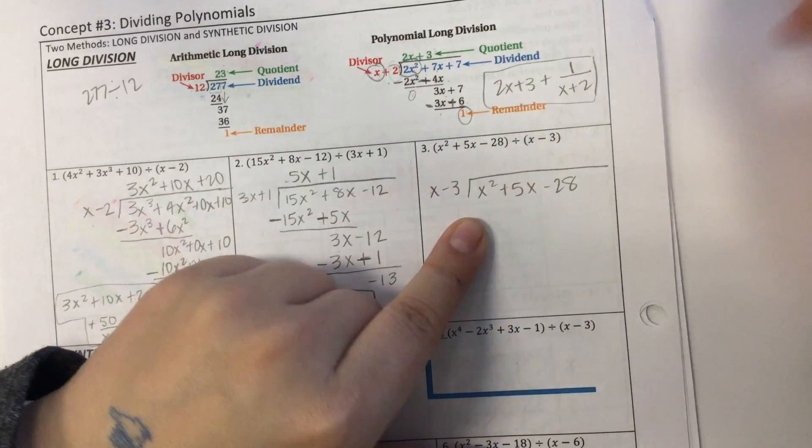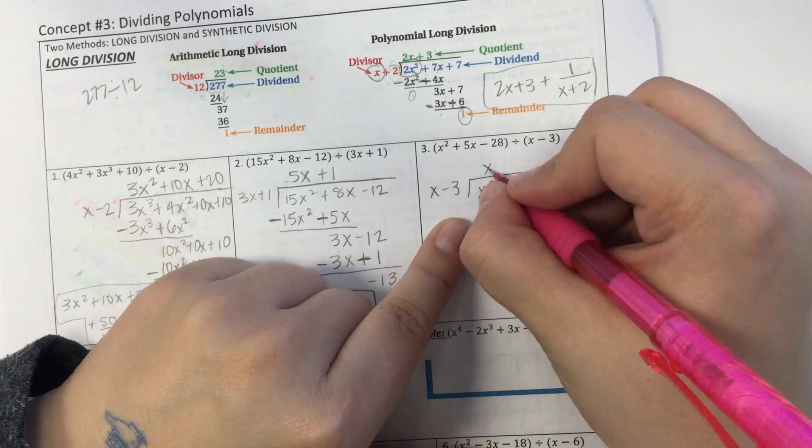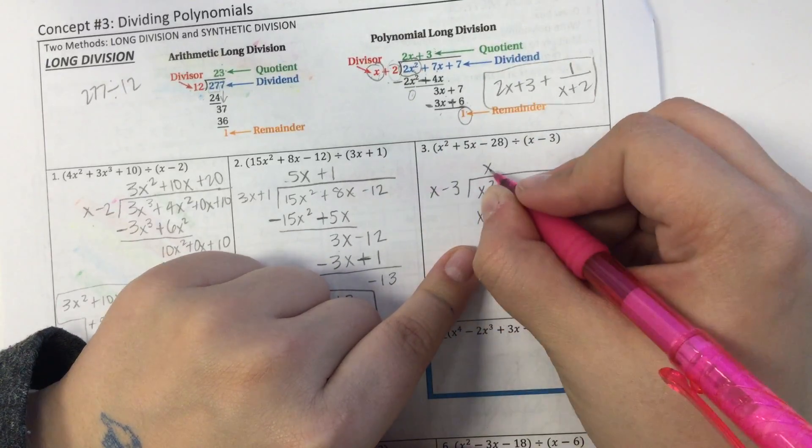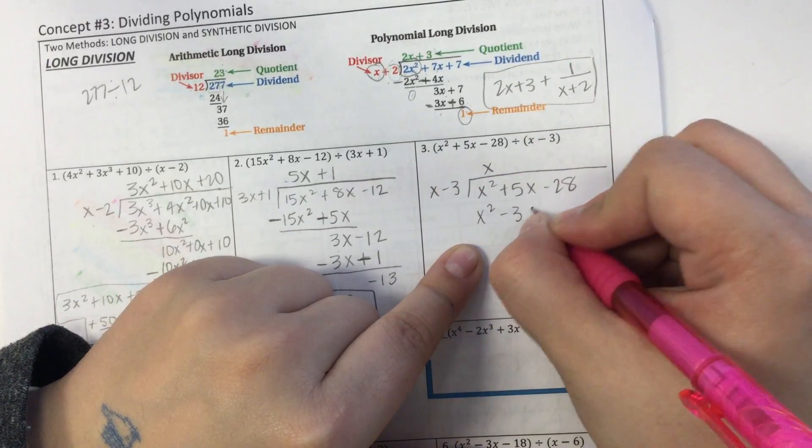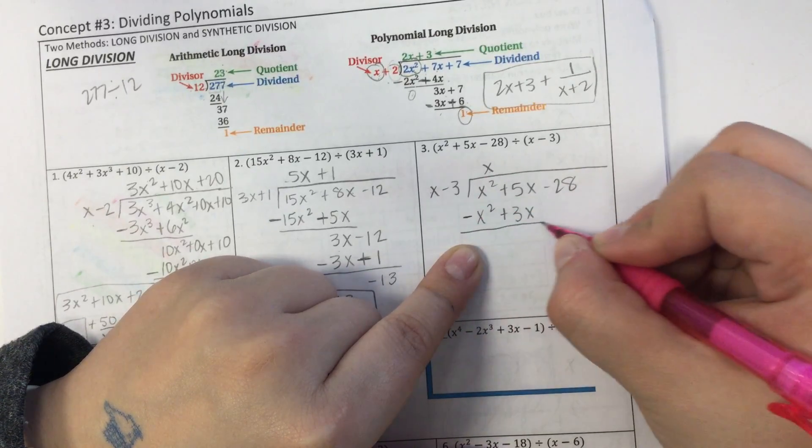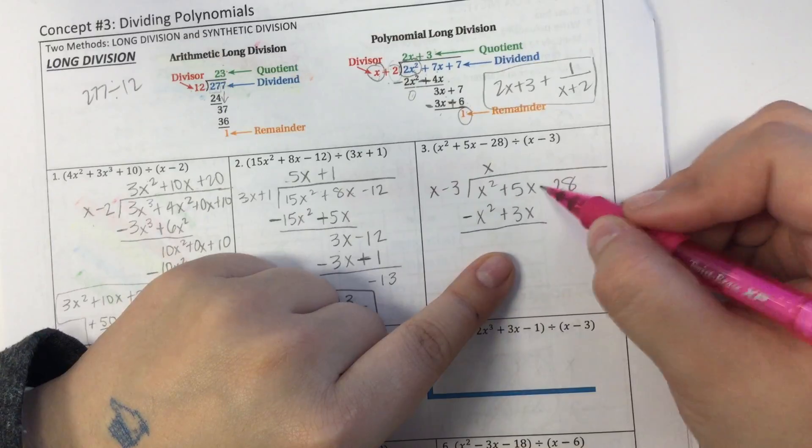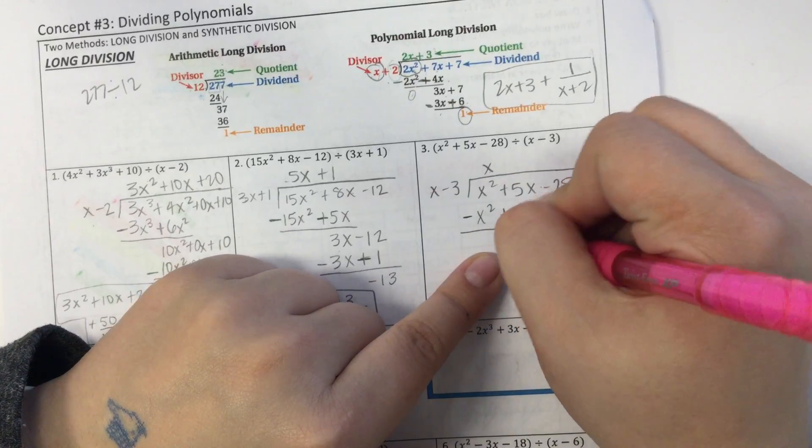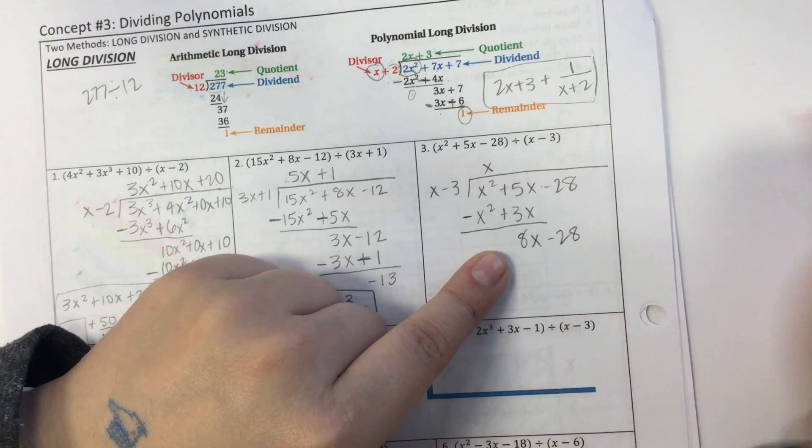Well, to get from x to x squared, I multiply it by x. x times x is x squared. x times negative 3 is negative 3x. Subtract the whole thing. So I make that to a plus. Those go away. 5x plus 3x is 8x. Bring down the negative 28.